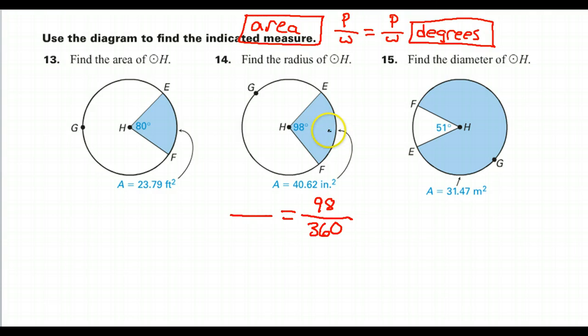This arrow is pointing to the blue part, so this number that they're giving us right here is just the sector area, the partial area. So this 40.62 goes in the top. Part over whole, this is the partial. So what we are finding is the whole area.